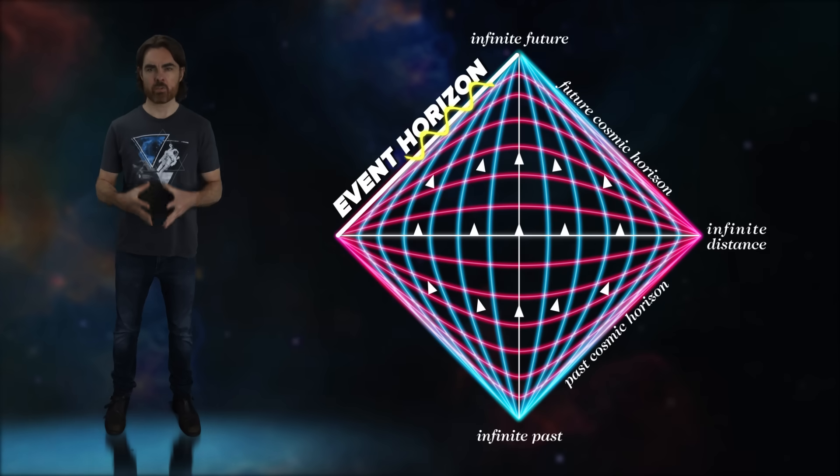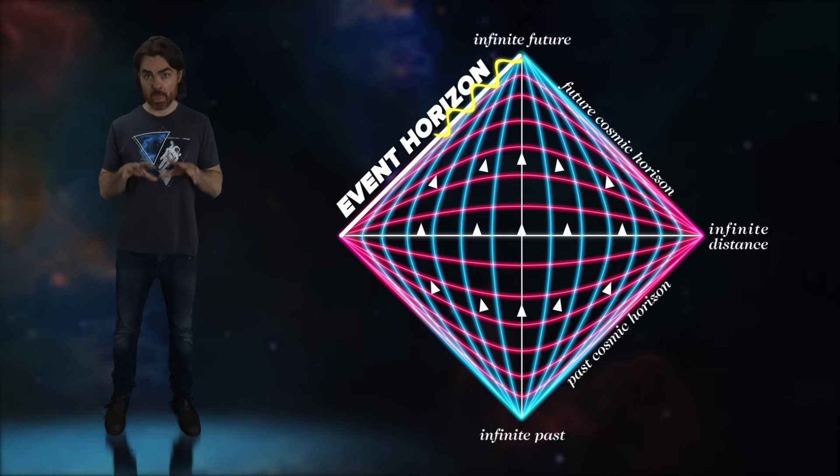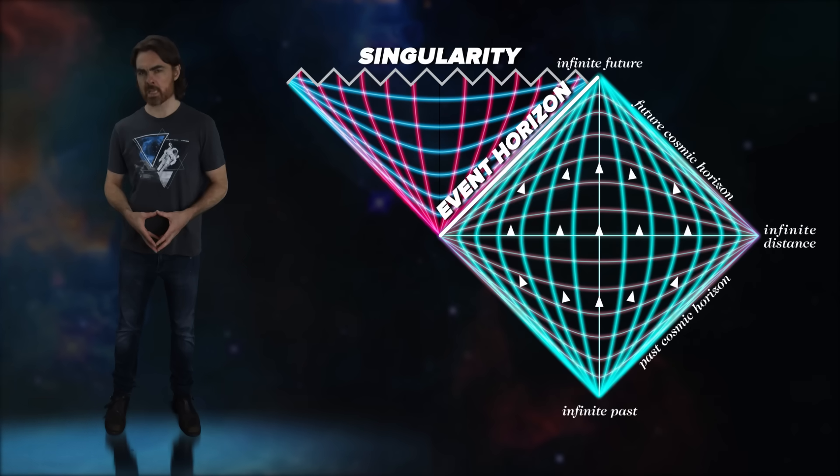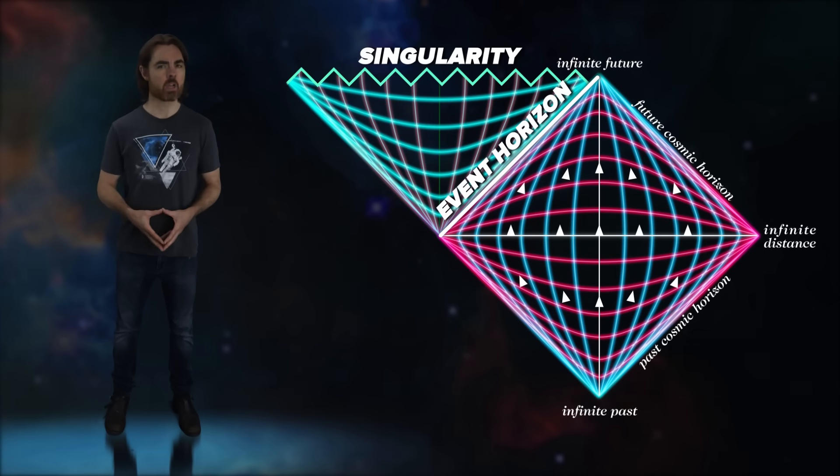Light traveling at that 45 degree angle takes infinite time to escape the event horizon. And the region beyond that line represents the interior of the black hole. There, the dimensions of space and time switch roles.